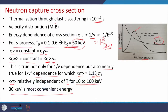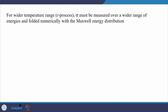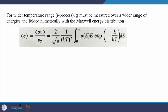For S process temperatures of 0.1 to 0.6 GK, E-naught is around 30 keV. For wider temperature ranges beyond this, we cannot take sigma at a single energy — it must be measured over a wider range of energies and then folded numerically with the Maxwell-Boltzmann distribution. Folding the measured capture cross sections over a wide range of energies with the Maxwell energy distribution gives the formula for the averaged capture cross section.